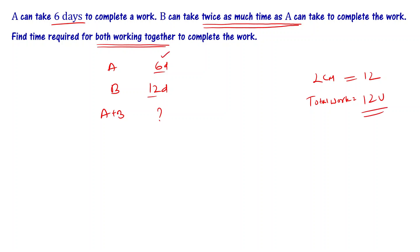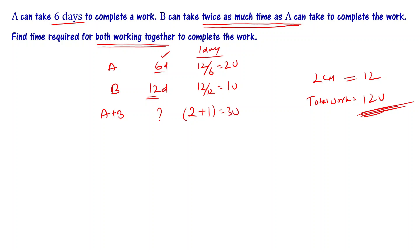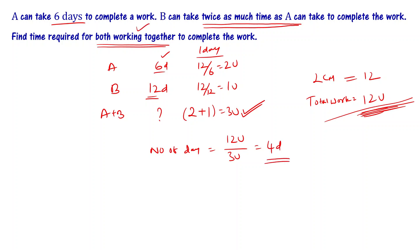A works 6 days to complete 12 units, so in 1 day A does 12 divided by 6, which is 2 units. B works 12 days to complete 12 units, so in 1 day B does 12 by 12, which is 1 unit. A plus B together do 2 plus 1 equals 3 units per day. Total work is 12 units, so number of days is 12 divided by 3, which is 4 days.